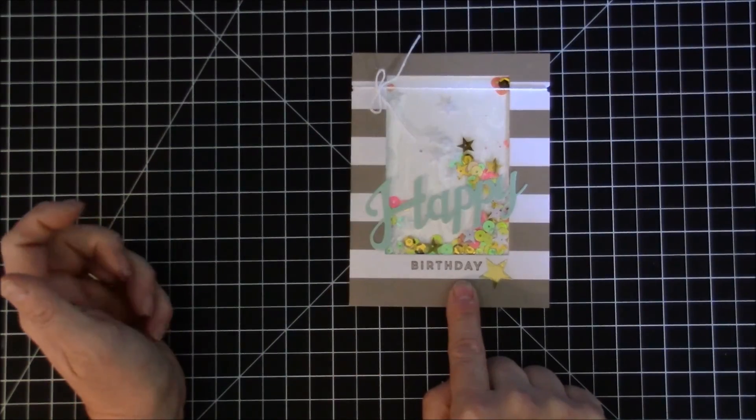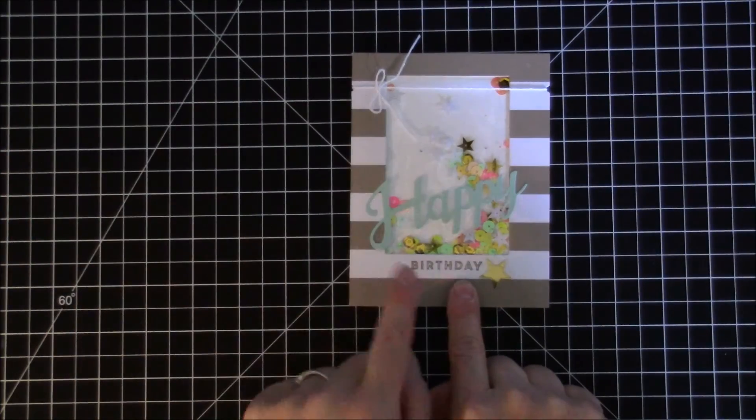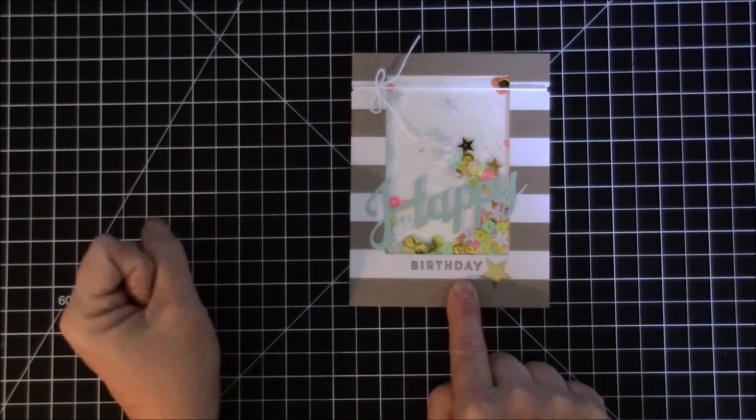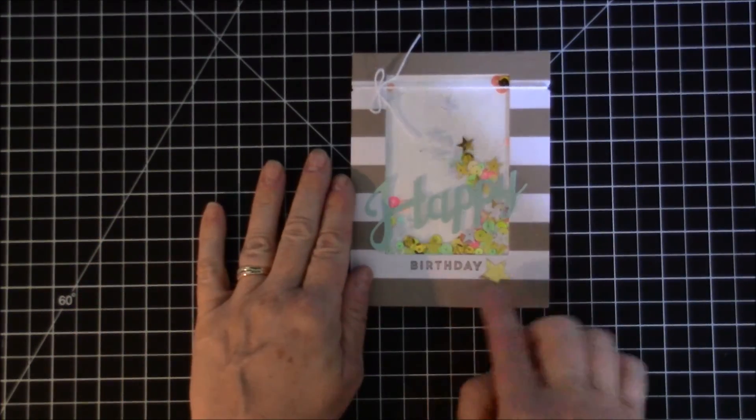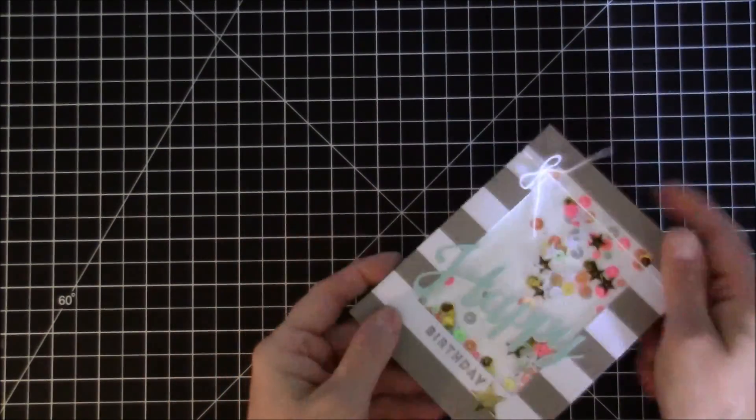Now in the kit you get a lot of extra gold lettering, so you definitely could just spell out happy on here with the gold lettering that will look just as good. But that's my first shaker card.